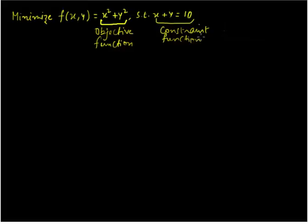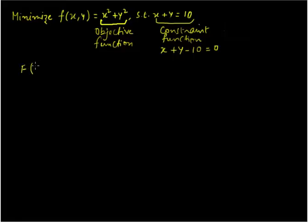When using the Lagrangian multiplier method, we have to set the constraint function equal to 0, so we are going to have to write this function in that form. Once we have done that, we are going to formulate a next function known as the Lagrangian function. Let's call it capital F, and it's going to be a function of three variables now: x, y, and a third variable lambda, which is also the Lagrangian multiplier.